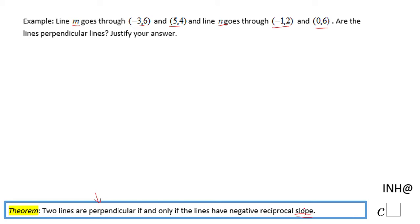I'm going to start with line M, which goes through the points (-3, 6) and (5, 4), and I'm going to use the slope formula.